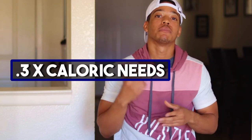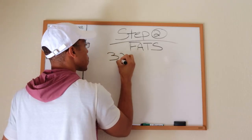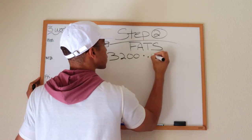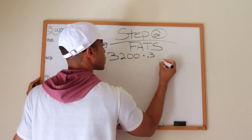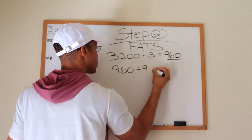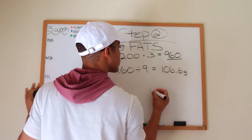The reason I suggest 30% from fat is because fats hold over two times as much caloric value as carbs and proteins — nine calories per gram of fat versus four calories per gram of protein or carbs. To calculate: take 0.3, multiply by your caloric needs. For me, that's 3,200 calories — 0.3 times 3,200 gives me 960. Then divide 960 by nine, which gives me 106.6 grams of fat per day. After you've done that, go ahead to step number three.